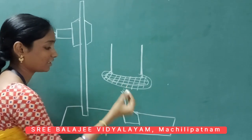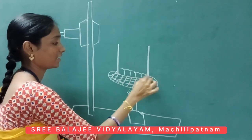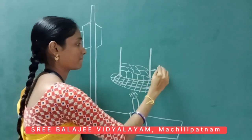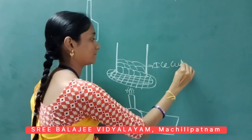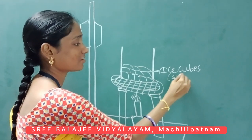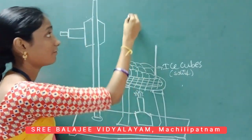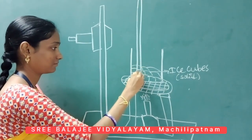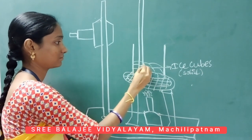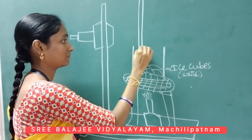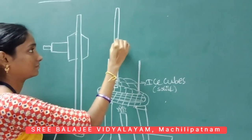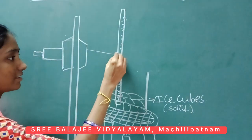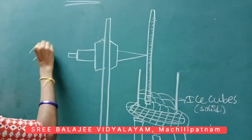Now we set up the Bunsen burner. In the beaker we have taken ice cubes. The ice cubes exist in solid form. Now we draw a thermometer, which is connected with the iron stand.